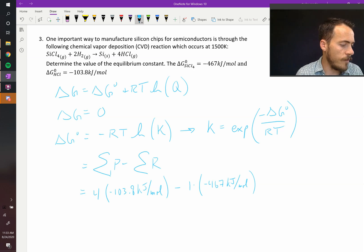When I plug those in, I find that delta G naught for this reaction is equal to 51.8 kilojoules per mole.